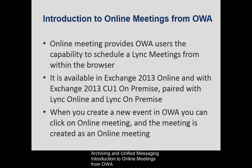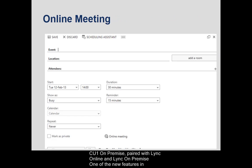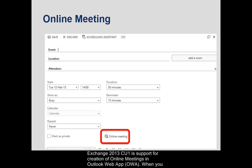Introduction to Online Meetings from OWA. Online Meeting provides OWA users the capability to schedule a Lync meeting from within the browser. It is available in Exchange 2013 Online and with Exchange 2013 CU1 on-premises, paired with Lync Online and Lync on-premise. One of the new features in Exchange 2013 CU1 is support for creation of online meetings in Outlook Web App, OWA.